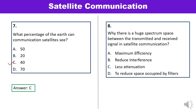Question 8: Why is there a huge spectrum space between the transmitted and received signal in satellite communication? Options are maximum efficiency, reduce interference, less attenuation, and to reduce space occupied by filters. In satellite communication, the transmitter and receiver in the satellite transponder are designed to operate at separate frequencies so they do not interfere with each other. The purpose is to reduce interference — answer B is correct.